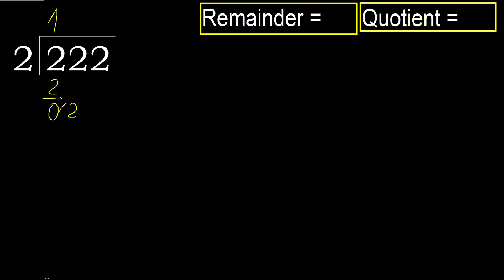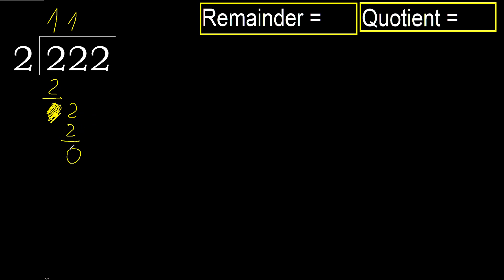Eliminate 0 on this side. 2: 2 multiplied by 1 is 2, which is not greater. Subtract, next. Eliminate 0.